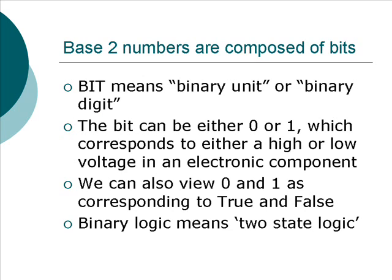Base 2 numbers are composed of bits. Bit, or B-I-T, means binary unit or binary digit. The bit can be either 0 or 1, which corresponds to either a high or a low voltage in some electronic component. We can also view 0 and 1 as corresponding to true and false, where false is 0 and true is 1.